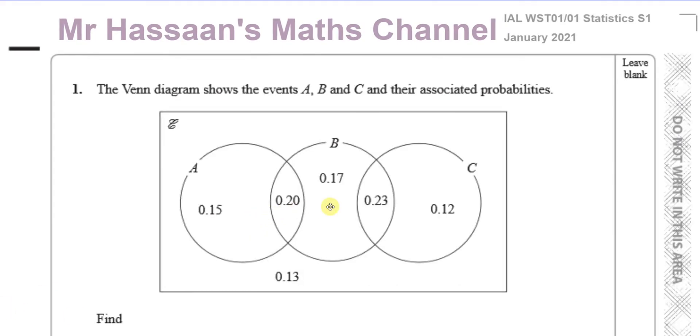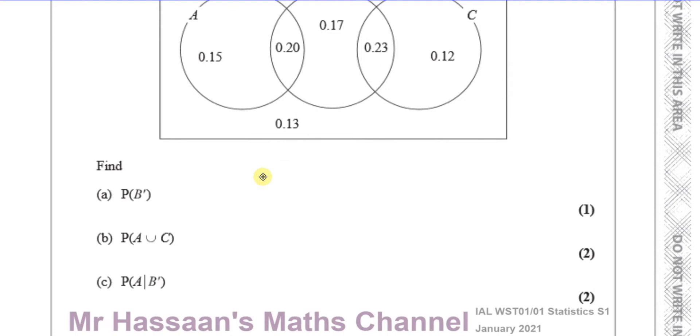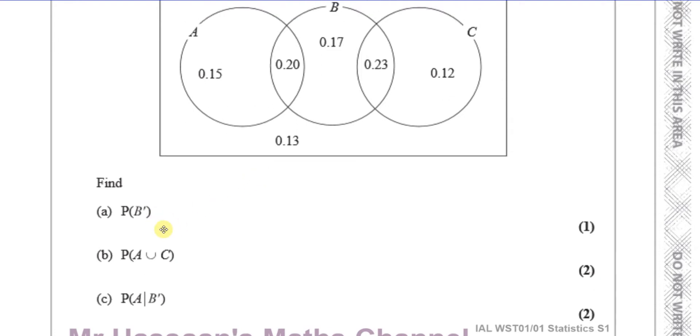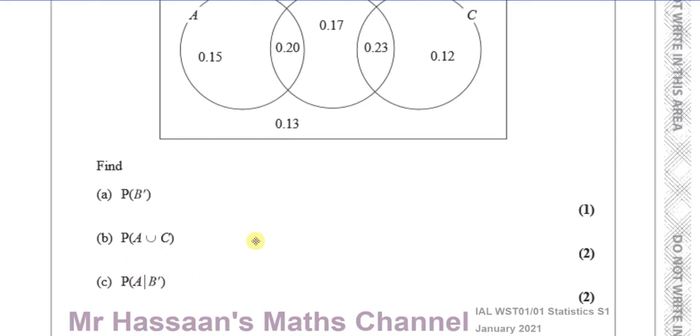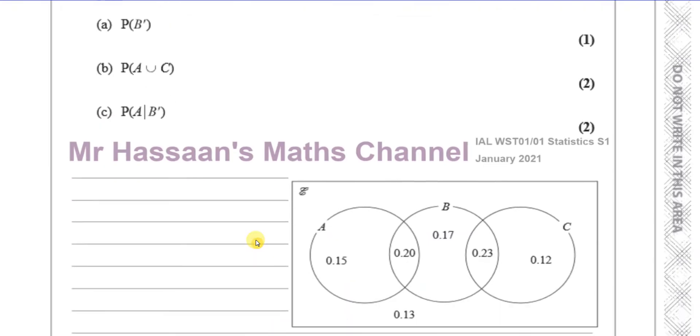Question number one says the Venn diagram shows events A, B, and C, and their associated probabilities. We don't know what they're about, we just know their probabilities here. Okay, so we've got to find the following in this set notation. We've got to find the probability of B complement, the probability of A union C, and the probability of A given B complement. So it starts off with a very simple, short question. So I've got the diagram here where it's visible, and I'm just going to write the answers next to these three spaces because it's a very quick question, actually, to be honest.